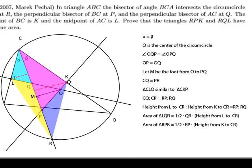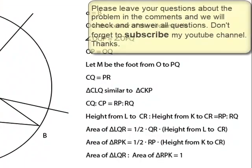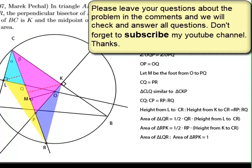Now, if we look at the ratio of the area of LQR to RPK, then the ratio would be QR over RP times the height ratio, which equals RP over RQ. That just cancels out and becomes one. This means that the ratio of the two areas is equal to one, so they have the same area.